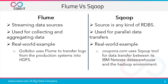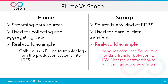Let us see how Flume is different from Sqoop. Flume and Sqoop are both data ingestion tools. Flume is used to ingest streaming data, while Sqoop is used to ingest data from relational databases like Oracle or MySQL. Flume is used for collection and aggregation of log data, while Sqoop transfers data in parallel by connecting to the database. For example, Goibibo uses Flume to transfer log data into HDFS, while Coupons.com uses Sqoop to transfer data between its data warehouse and the Hadoop world.